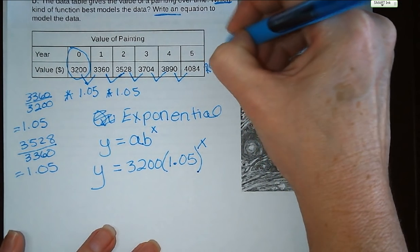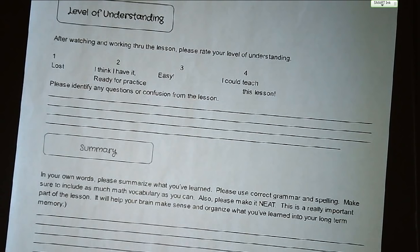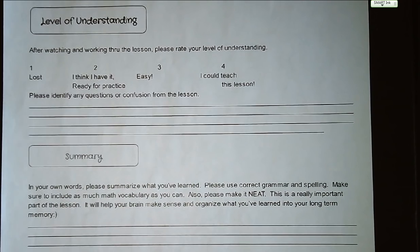All right. Next page is our summary page. Rate your level of understanding of this lesson. Write down any questions or concerns you have. And write down a summary of how to identify if something is linear, quadratic, or exponential. That's it for today and for Chapter 9. See you in class.